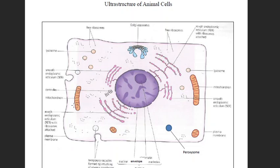Mitochondria contain a matrix where the process of the citric acid cycle, or TCA cycle, takes place. It is regarded as the powerhouse of the cell, where energy is synthesized and stored. The terminal electron acceptor is oxygen, and the electron transport chain (ETC) also takes place there. Both the TCA cycle and ETC occur in the mitochondria.